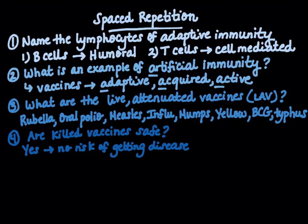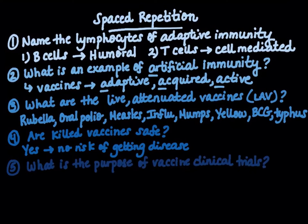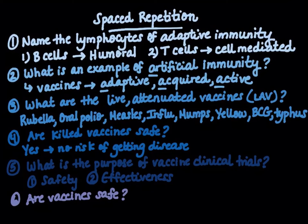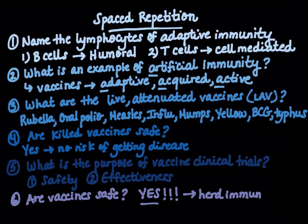Back to spaced repetition for one more review. What is the purpose of vaccine clinical trials? Two things: number one, safety of the vaccine; number two, its effectiveness — which we'll discuss further in our next video. Lastly, are vaccines safe? Yes — although this is a very controversial topic, vaccines have historically and statistically saved numerous lives and are needed for herd immunity.